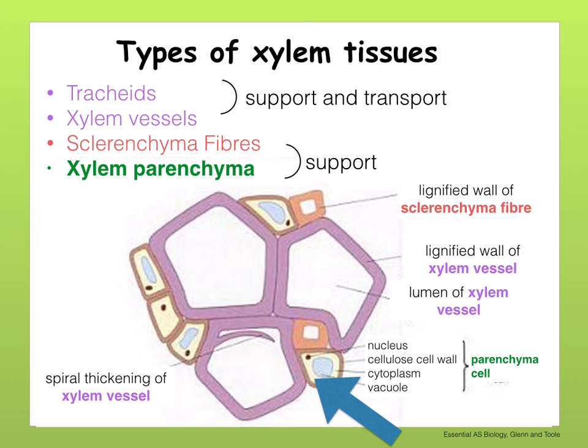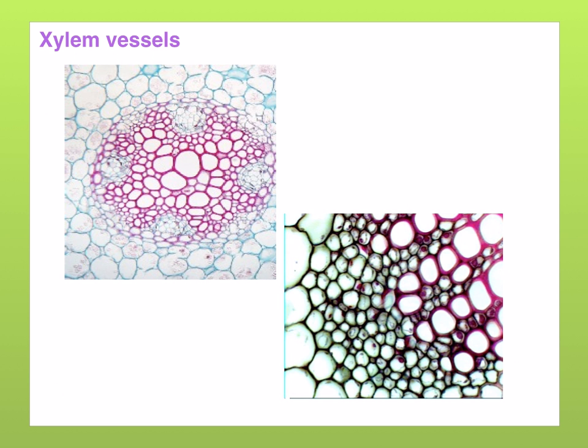Finally, xylem parenchyma. These are living cells with a thin cellulose cell wall and they function as packing tissue. In this transverse section, notice the proto-xylem at the ends of the arms — it's much smaller than the meta-xylem in the middle. When you draw xylem under high power, use a double line to show the wall is thickened — don't colour it, just use a double line. Note the parenchyma packing cells between the xylem vessels.